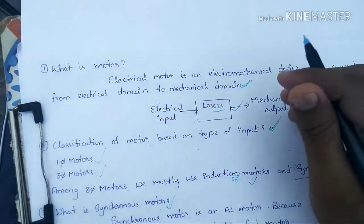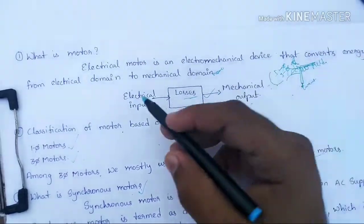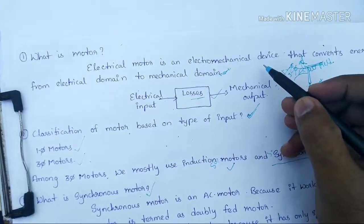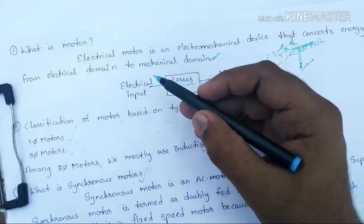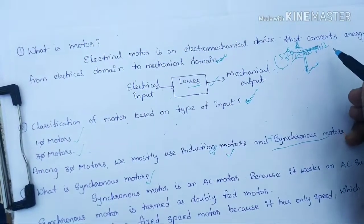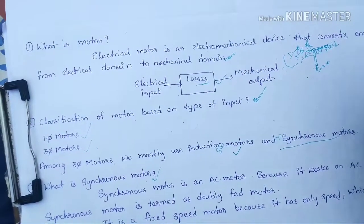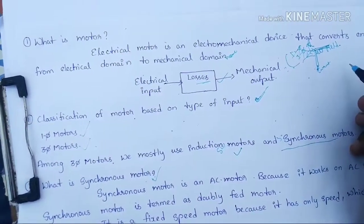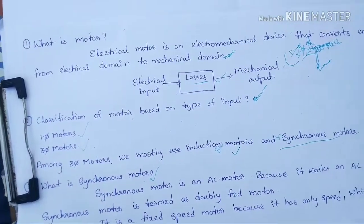An electric motor is an electromechanical device that converts energy from the electrical domain to the mechanical domain. It is a rotating device that converts electrical energy to mechanical energy. This works by the principle of Fleming's Left Hand Rule: whenever a current-carrying conductor is placed in a magnetic field, the conductor experiences a force.